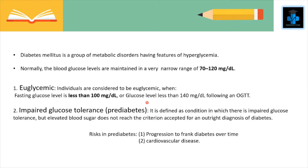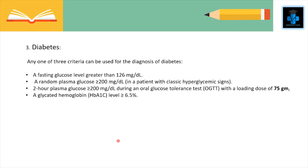OGTT is oral glucose tolerance test. The next definition is prediabetes, otherwise impaired glucose tolerance. It is defined as a condition in which there is impaired glucose tolerance but the elevated blood glucose does not reach the criterion accepted for an outright diagnosis of diabetes. The risks for prediabetes are progression to frank diabetes over time and also cardiovascular diseases.